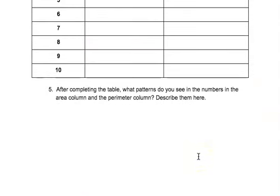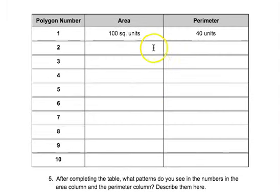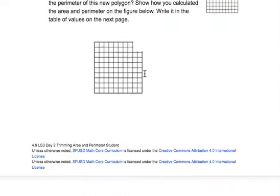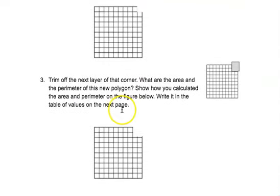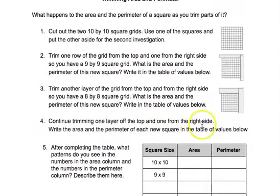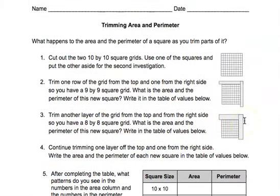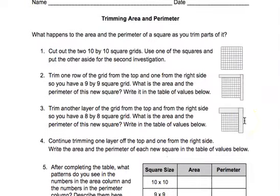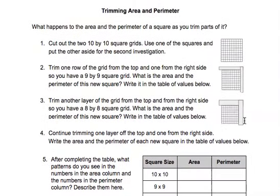After completing the table, what patterns do you see in the numbers in the area and perimeter column? Describe them here. So really we're looking for patterns with area and perimeter for when we just remove a part of the square versus when we remove a whole length and a whole width of the square. So similar tasks but they're slightly different so that we can look at the patterns and see how they're similar and different in these situations.